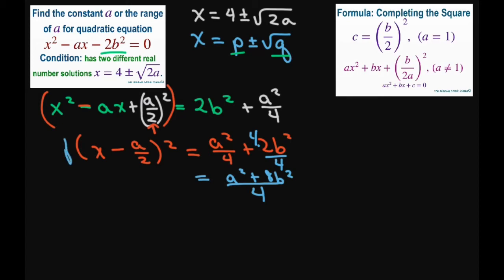Now when you square root both sides you have to do plus and minus here. So you're going to get x minus A divided by 2 equals plus or minus square root of A squared plus 8b squared divided by 4.